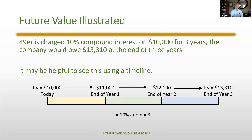You start with $10,000, and every single moment it's growing, but we're only compounding interest annually. So it grows on the $10,000 for a year, and at the end of year one you have $11,000 — that becomes the new basis for growth. In year two, growth is based on $11,000, so it jumps to $12,100. Then $12,100 is the basis in year three, which is why we get to $13,310.